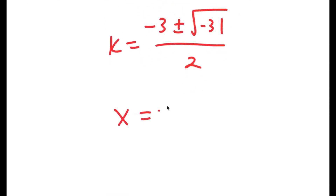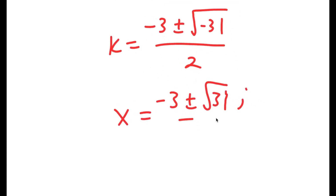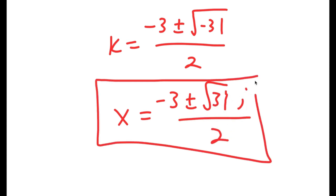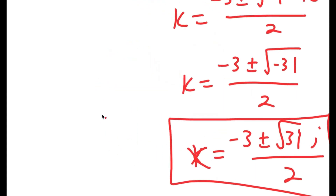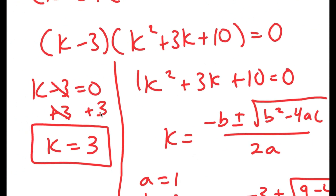I can rewrite this as negative 3 plus or minus the square root of 31 times i, over 2, because i is equal to the square root of negative 1. So this gives two more solutions of k. These are my three solutions.